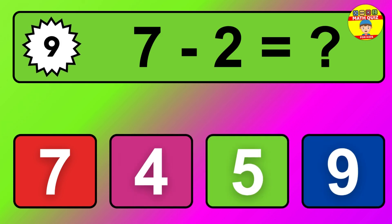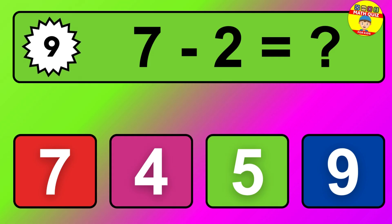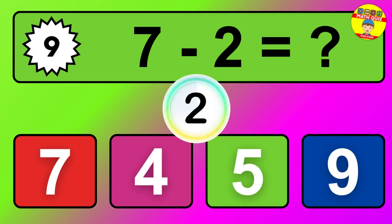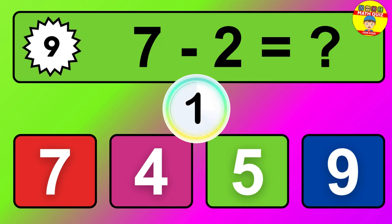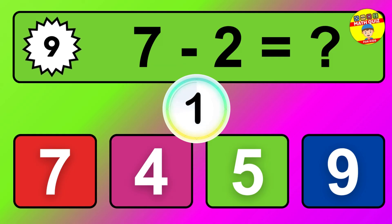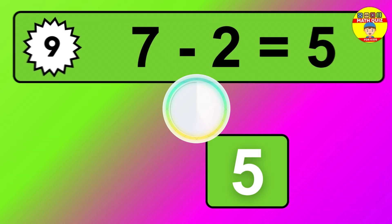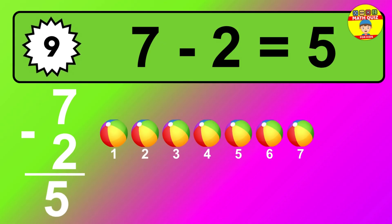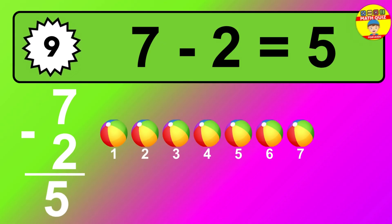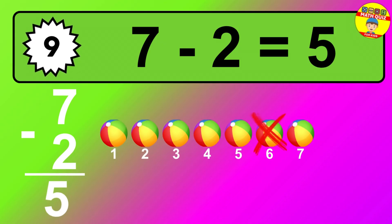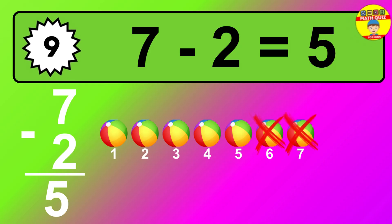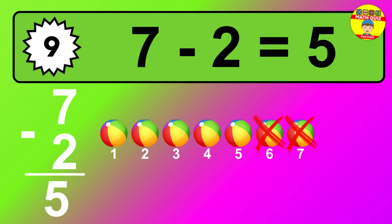Question 9. 7 minus 2 equals what? The answer is 7 minus 2 is 5. Let's count it: 1, 2, 3, 4, 5.